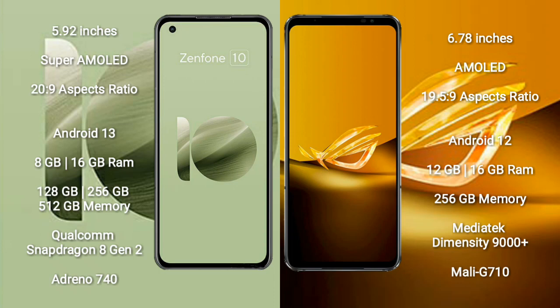The Asus Zenfone 10 comes with 8GB or 16GB RAM and 128GB, 256GB, or 512GB internal storage, powered by the Qualcomm Snapdragon 8 Gen 2 processor. The Asus ROG Phone 6D comes with 12GB or 16GB RAM and 256GB internal storage, with an octa-core MediaTek Dimensity 9000 Plus processor and Mali-G710 GPU.